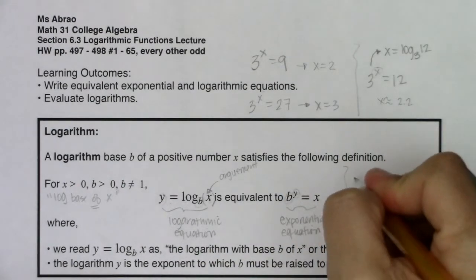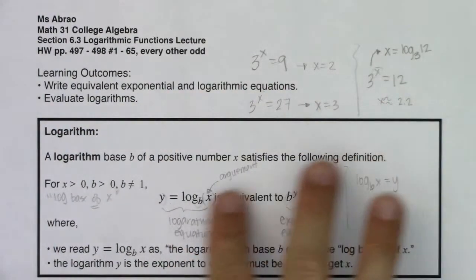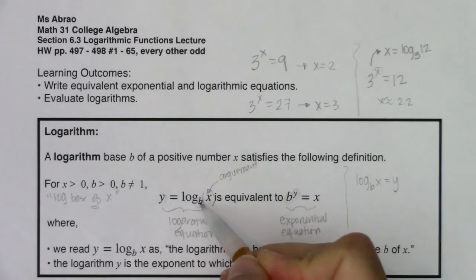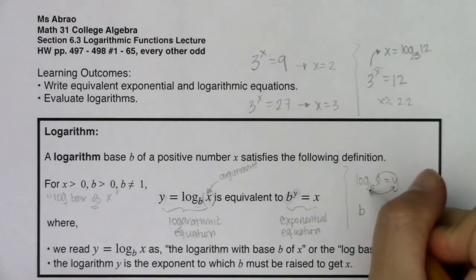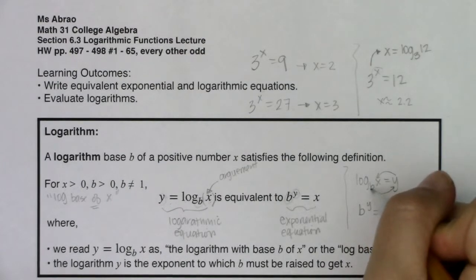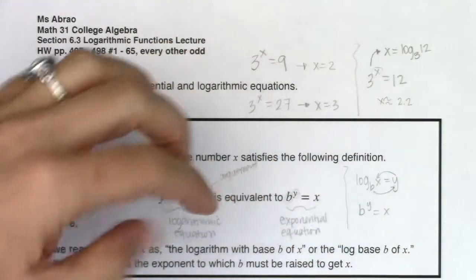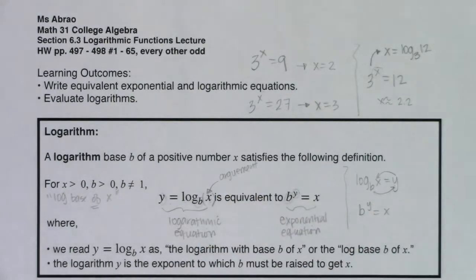Back when I learned this, I always wrote this the other way: log base b of x is equal to y, and I called it the circle equation. Nobody calls it the circle equation, but it helped me go from one form to the other. I knew the base of the logarithm was the same as the base of my power. Then I'd draw a little circle — I'd go to b, hop over the equal sign, and say b to the y equals x. That was how I helped myself learning to change logarithmic equations into exponential equations.